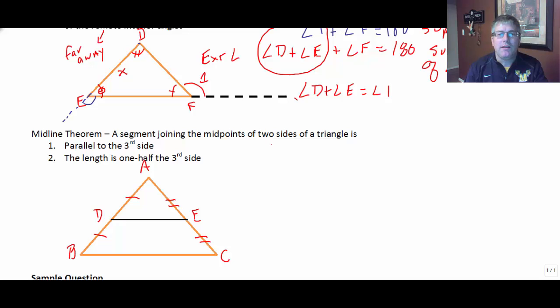And any segment joining the midpoints of two sides of the triangle. So the segment joining the midpoints of the two sides of BD, E. So that we know that DA is congruent to BD. So D is the midpoint of AB.